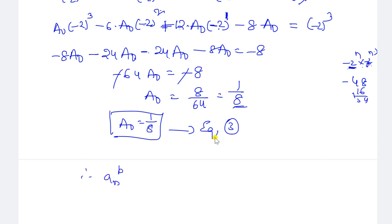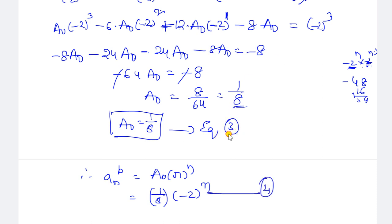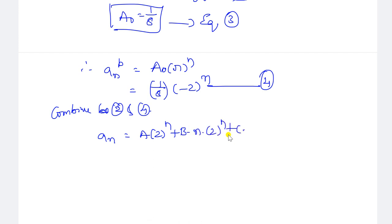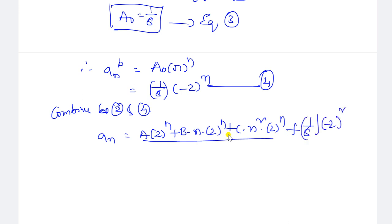Therefore the particular solution is a_n^(p) equals (1/8)·(-2)^n. Combining both the homogeneous solution (equation 2) and the particular solution (equation 4), the general solution is: a_n equals a·2^n plus b·n·2^n plus c·n²·2^n plus (1/8)·(-2)^n.